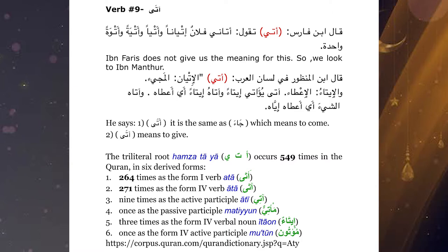When we look at Corpus Quran, we find that these three root letters are mentioned 549 times in the Quran. 271 of them come in the form of ata, meaning to give, to bestow — a gift, whatever that gift is. And 264 times in the past tense verb of ata, meaning he came.